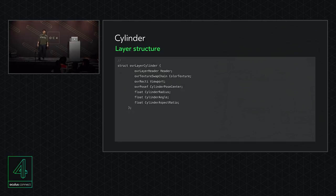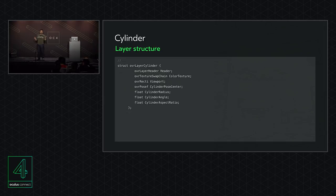A quick look at the cylinder data structure: notably, instead of a height option we have an aspect ratio. Cylinders use a 2D texture and the content creator likely expects a particular aspect ratio to be shown, so we lock down that aspect ratio for the developer. From the aspect ratio and the angle of the cylinder, we calculate the height with simple math behind the scenes.